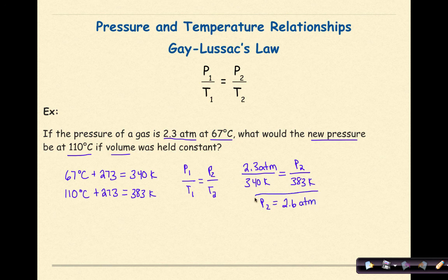Like we've stated before, it's always good to look at your answer and make sure that it makes sense. So we can see here that our temperature is increasing as we're going from 340 Kelvin to 383 Kelvin. As a result, our pressure should also increase, and we see that as we go from 2.3 atmospheres to 2.6 atmospheres. And this is a very brief example of a Gay-Lussac's Law problem.